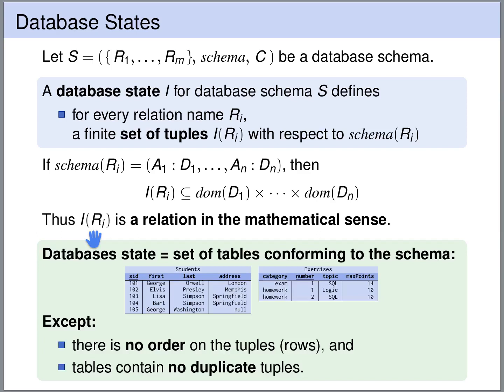The difference is that there is no order on the tuples, there is no order on the rows, and the tables do not contain any duplicate tuples.